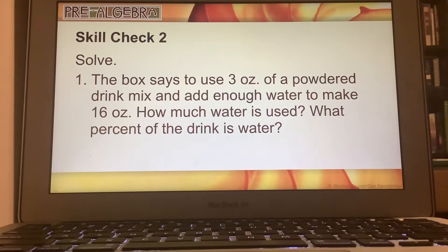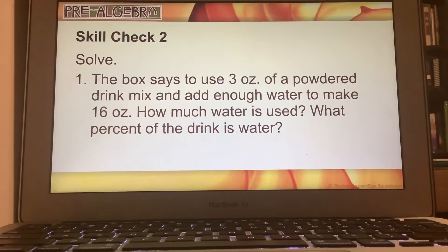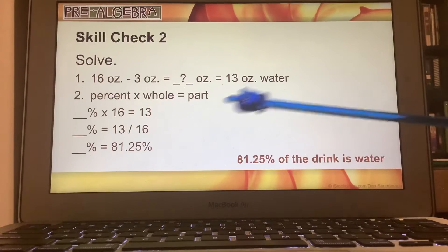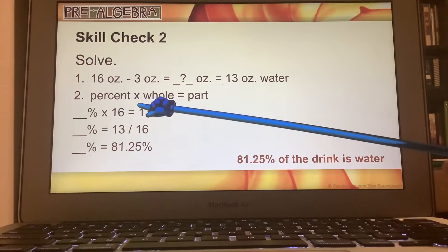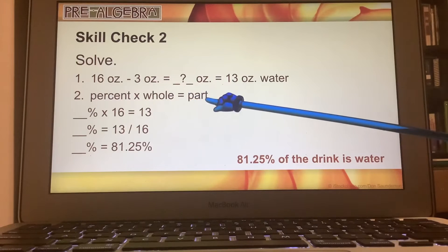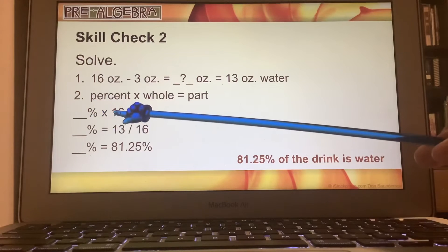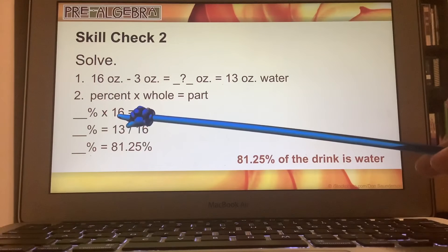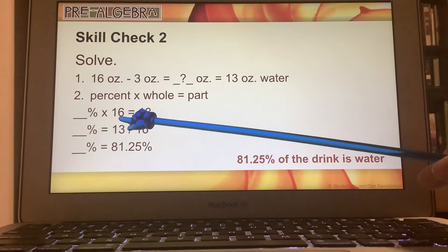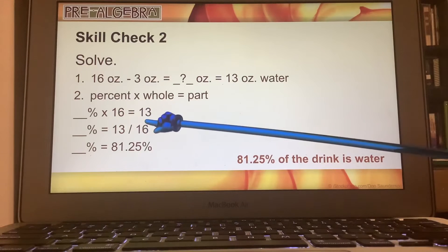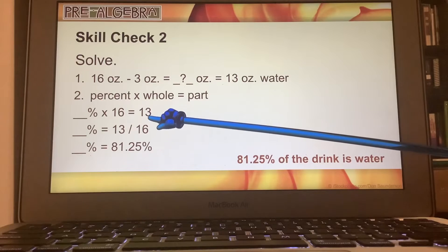Then what percent of the drink is water? So that means you're going to take a look here. The percent of the whole is equal to the part. So what percent of the water or of the total, the total drink, which is 16 ounces equals water,